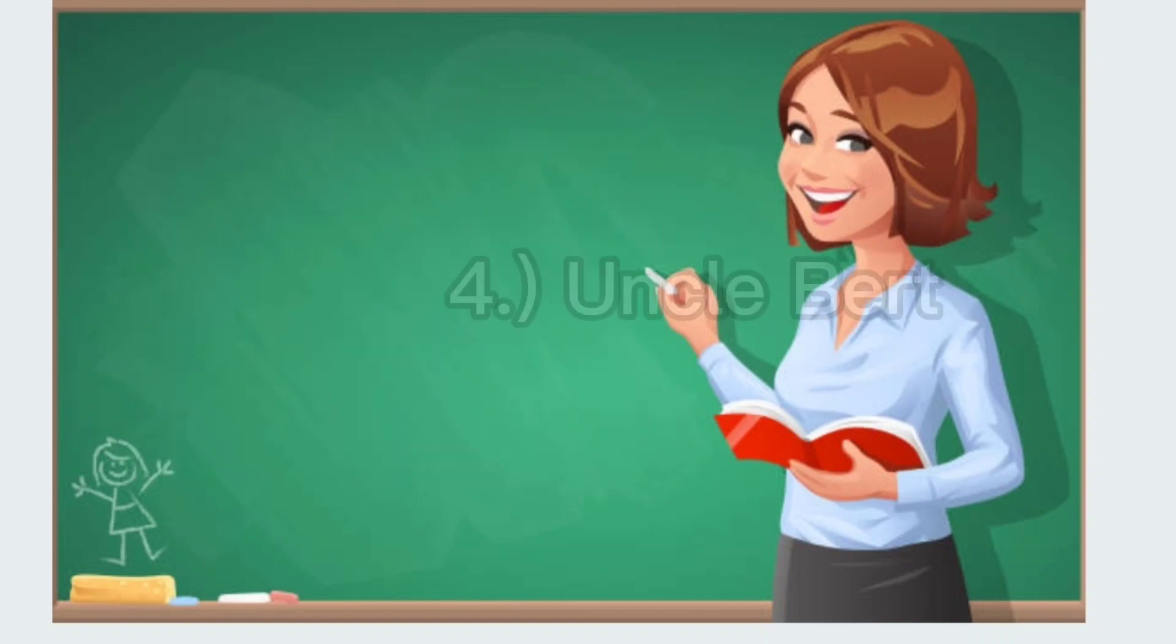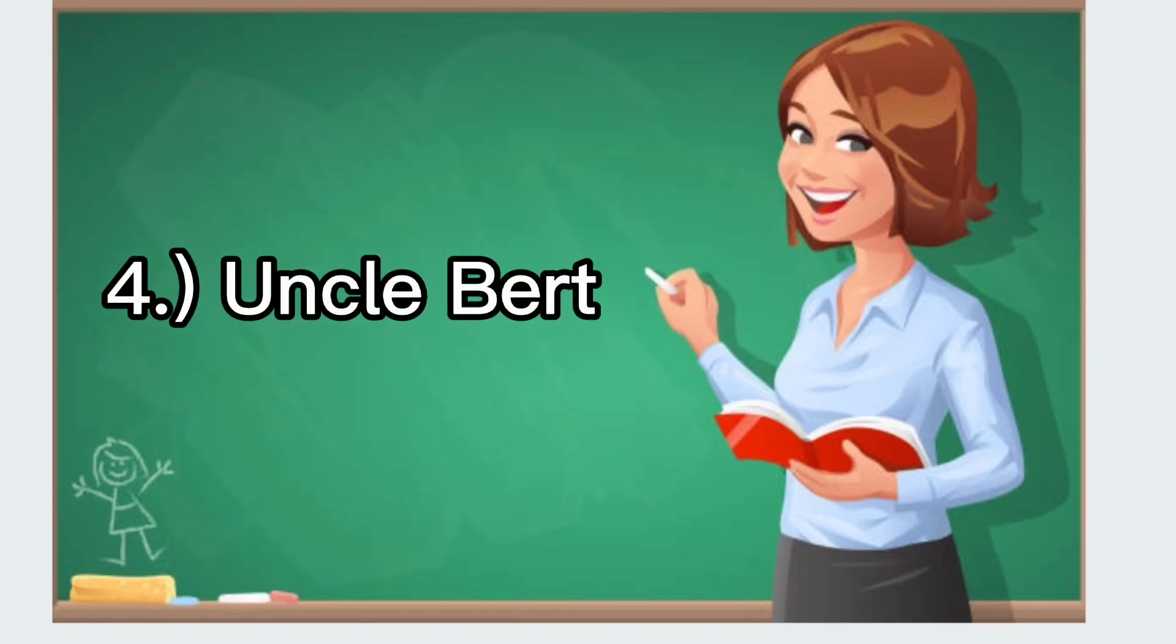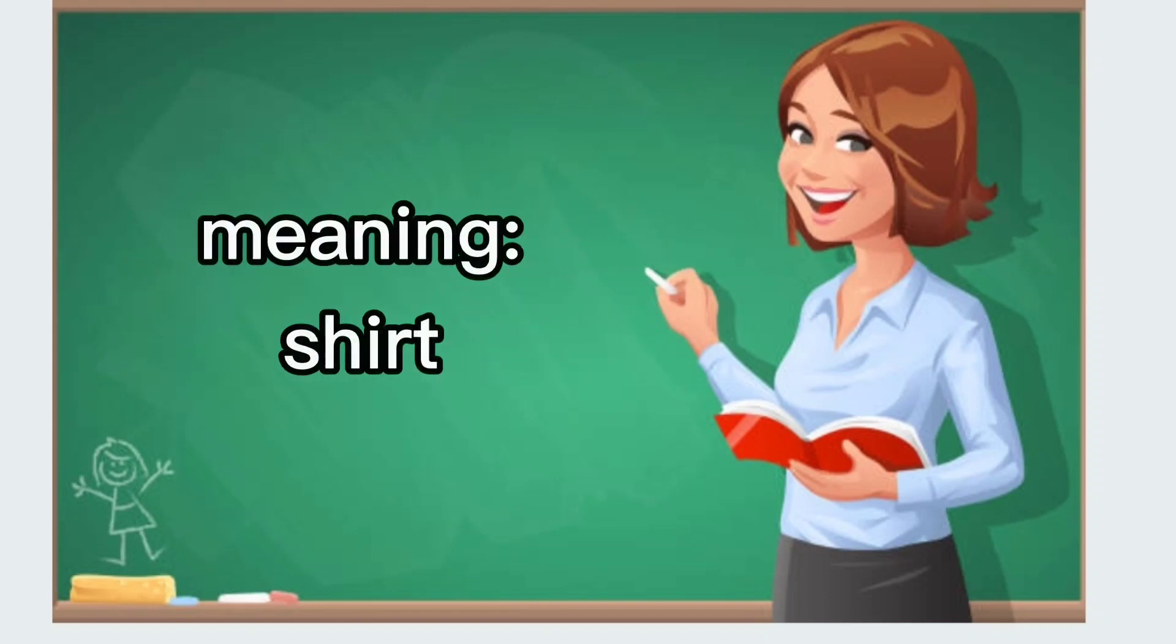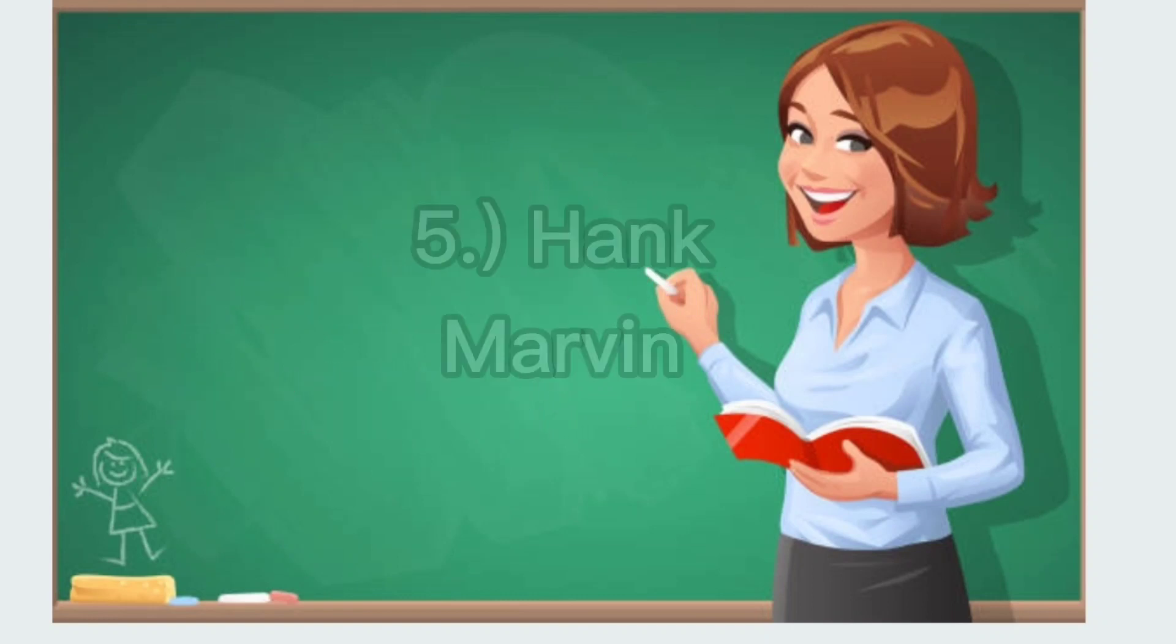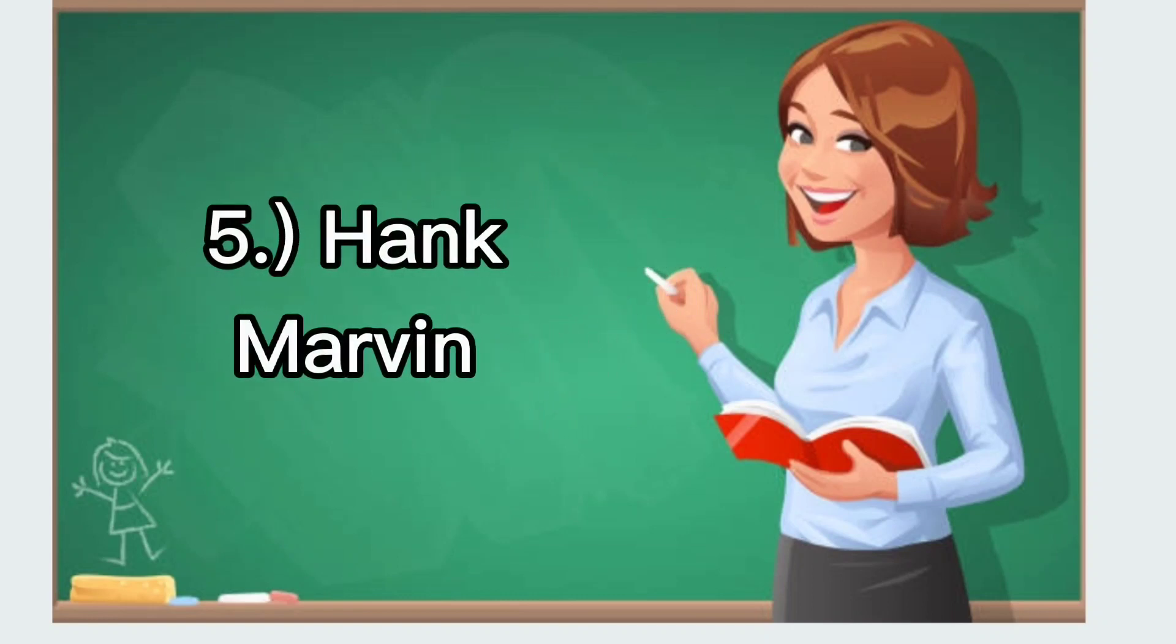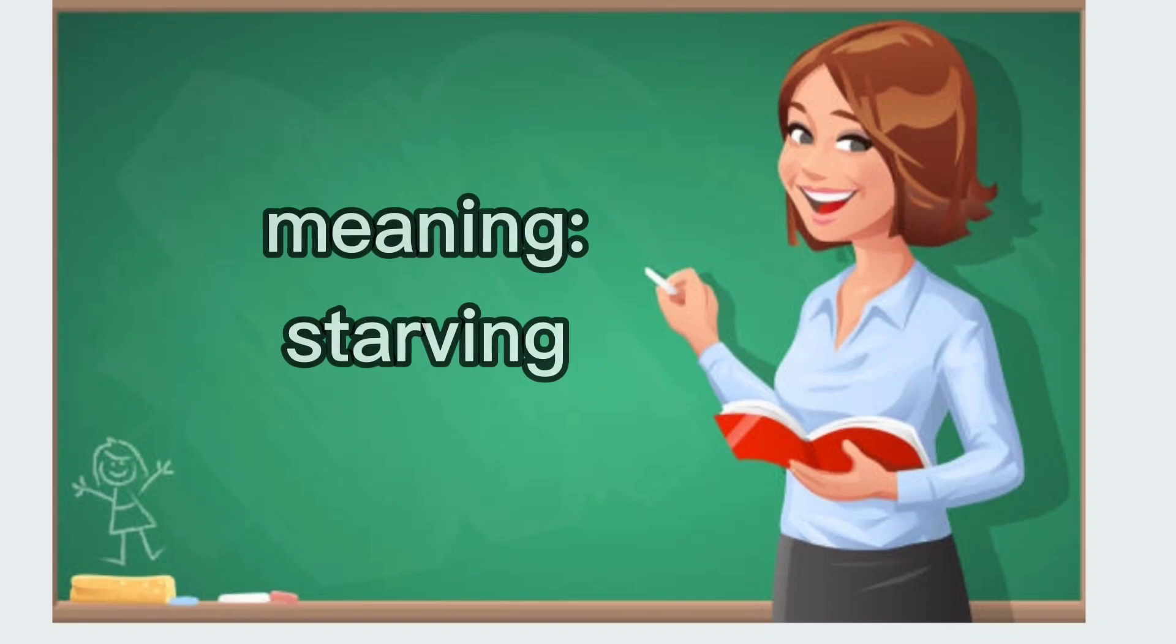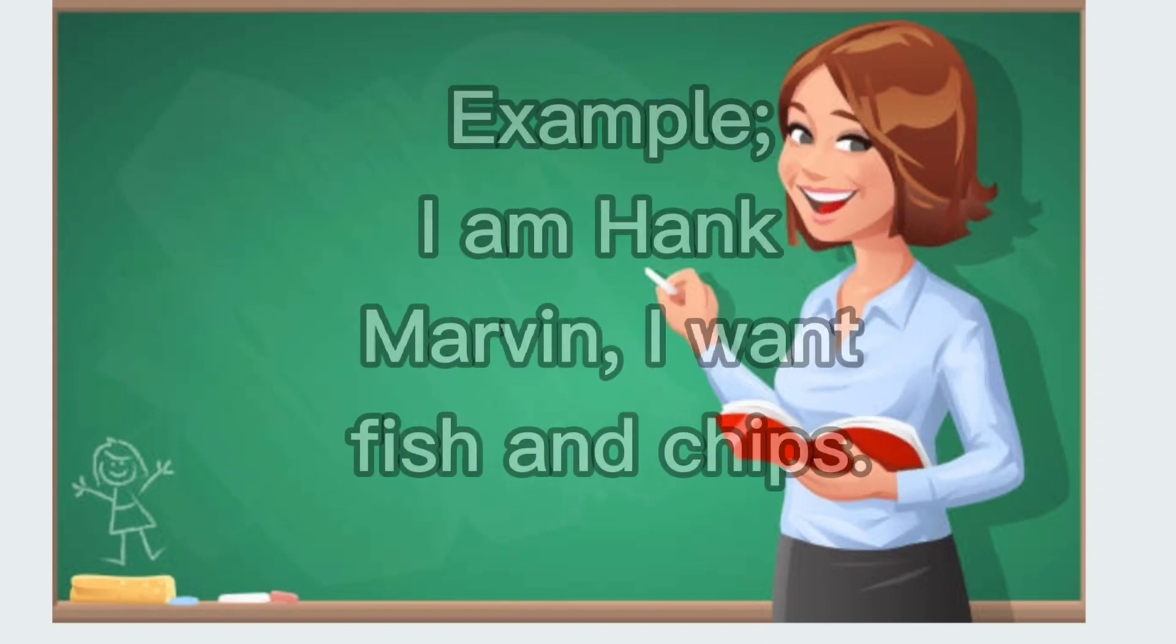Four: uncle burp, meaning shirt. Example: she is hanging her uncle. Five: Hank Marvin, meaning starving. Example: I am Hank Marvin, I want fish and chips.